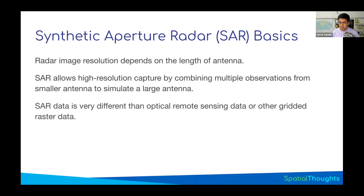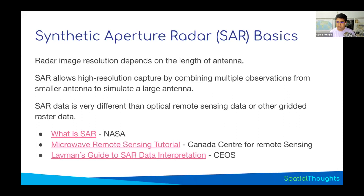SAR data is not looking at what the human eye sees. When the radar pulse is shot from the satellite, it measures how much of the signal is reflected back — this is called backscatter. When you look at a SAR image, the pixel values represent backscatter. You need to interpret that and correlate it with what is on the ground. I'll link to some good tutorials that explain what SAR sensors do and how backscatter works, so I encourage you to look at those.